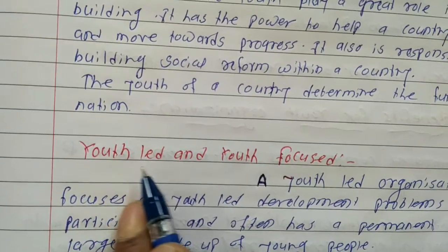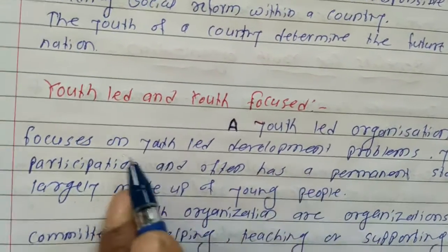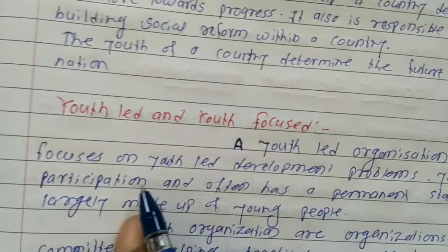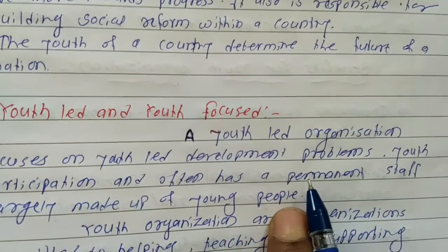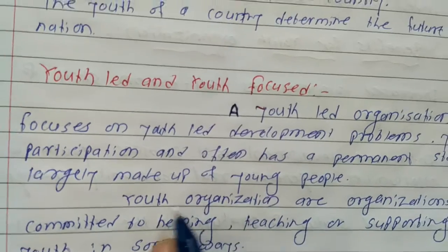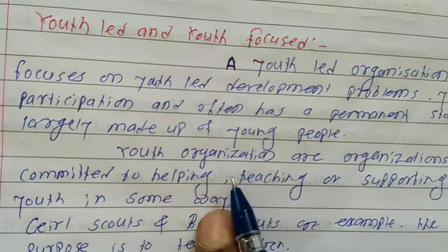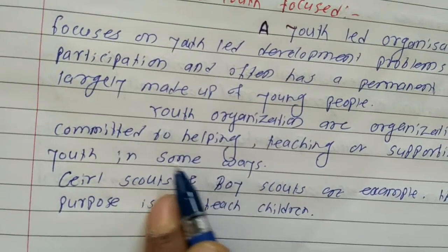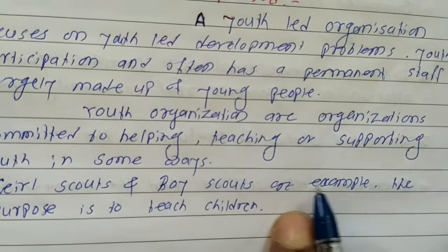The second point is Youth Lead and Youth Focused organizations. A youth lead organization focuses on youth-led development programs. Youth participation has a permanent staff largely made up of young people. Youth organizations are organizations committed to helping, teaching or supporting youth in some ways. For example, Girl Scouts and Boy Scouts are examples.